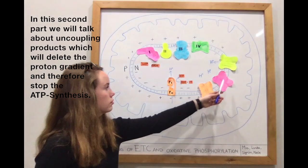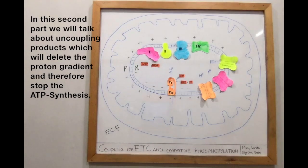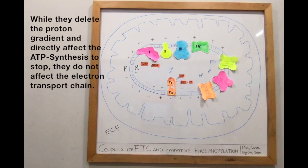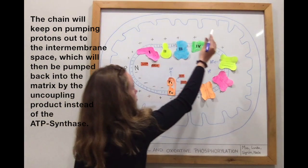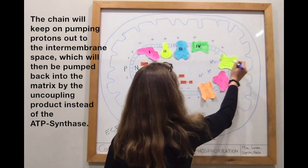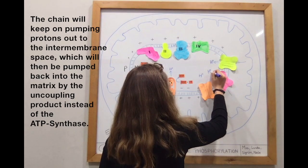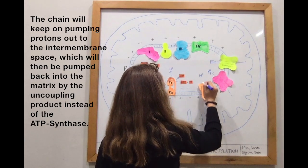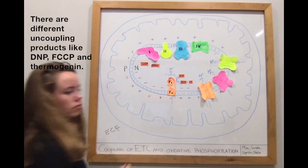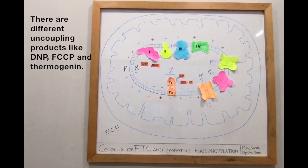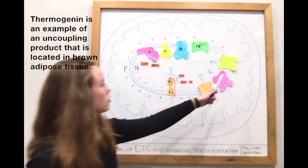In this second part we will talk about uncoupling products, which delete the proton gradient and therefore stop ATP synthesis. While they directly affect ATP synthesis, they do not affect the electron transport chain. The chain will keep pumping protons out into the intermembrane space, which will then be pumped back into the matrix by the uncoupling products instead of the ATP synthase. Examples of uncoupling products include DNP, FCCP, and thermogenin.